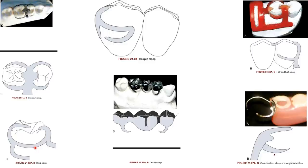Hairpin clasp (also known as fish hook or reverse action clasp) is a type of simple circulate clasp that, after crossing the facial surface of the tooth, loops back to engage the proximal undercut. It is used when the undercut is near the edentulous space and when there is presence of soft tissue undercut.